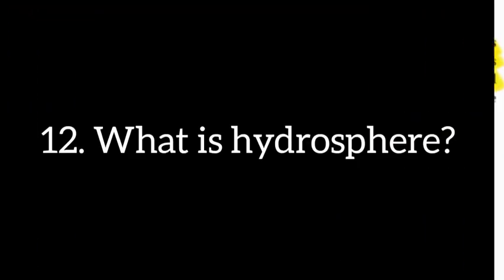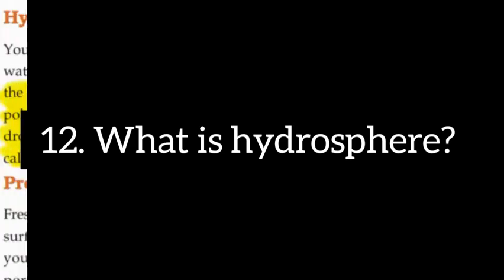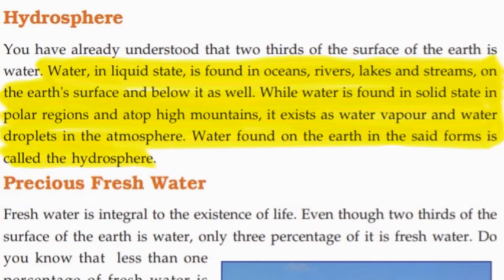Next question: What is the hydrosphere? Water is found in oceans, rivers, lakes and streams on the earth's surface and below it as well. While water is found in solid state in polar regions and atop high mountains, it exists as water vapor and water droplets in the atmosphere.